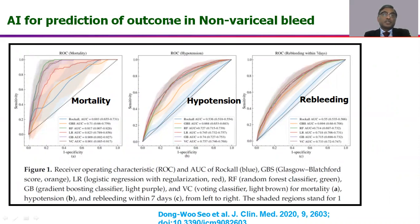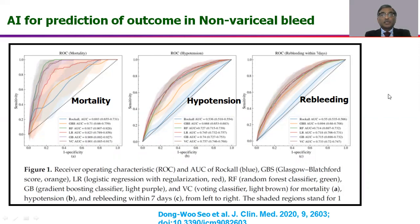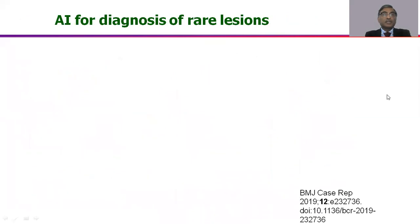We have been predicting outcomes in non-variceal GI bleeding using the Rockall score and Glasgow score. Four AI-based algorithms were tested against these two scores. Concentrating on the blue line (Rockall score) and orange line (Glasgow score), all four AI algorithms performed better for prediction of mortality, hypotension, and rebleeding. It is most likely that in future these conventional scores will actually be replaced by AI-enabled software.